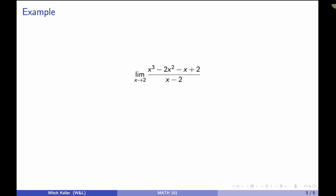So let's start by taking a look at this example. We have the limit as x approaches 2 of x cubed minus 2x squared minus x plus 2, all divided by the quantity x minus 2. Now the first thing you'll notice is this is undefined at x equals 2 because we would be dividing by 0, and that doesn't make sense.